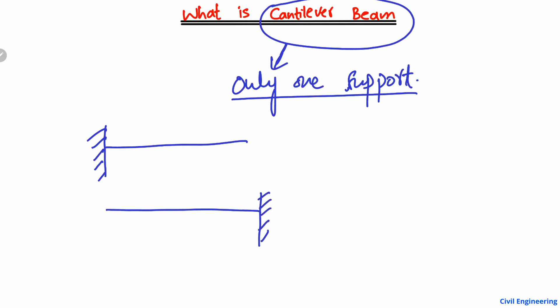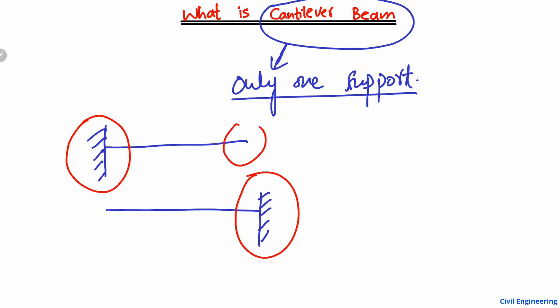There is no other support provided for this kind of beam. Such a beam where only one support is provided — for example, here you see a fixed support, and here is a fixed support — this type of beam will be known as a cantilever beam. The other end of the beam will be a free end.